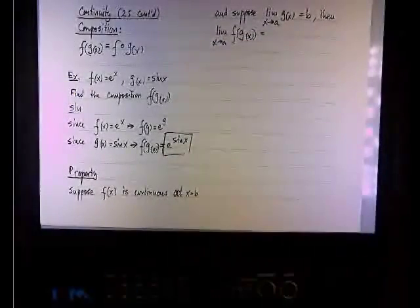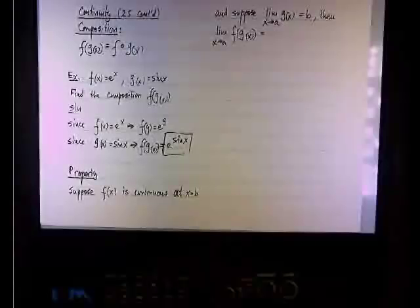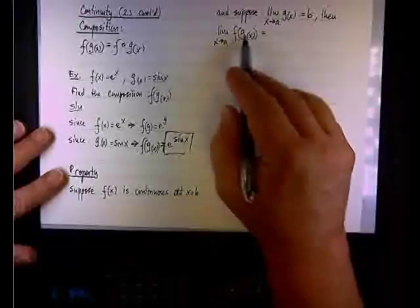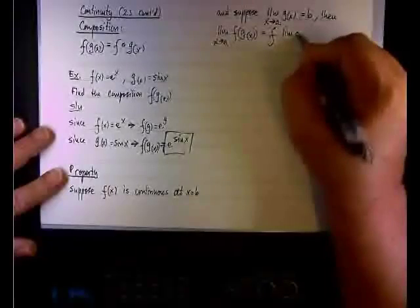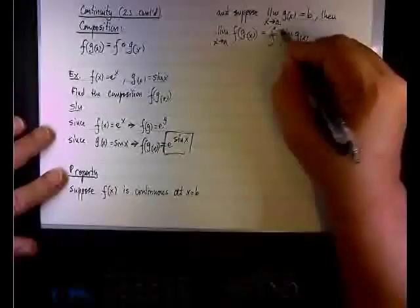Remember, there's a rule: the limit of a power function is the power of the limit, the limit of a root of a function is the root of the function. Well, it turns out that this rule applies to composition as well. The limit of the composition f(g) will be f times the limit of g(x) when x approaches a.